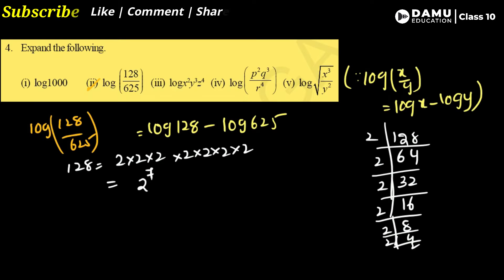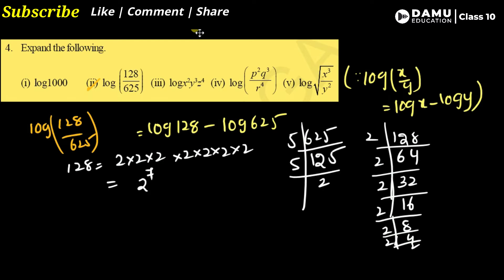For 625, we can divide directly by 5. Dividing by 5 repeatedly gives us 5 × 5 × 5 × 5, so 625 = 5⁴.